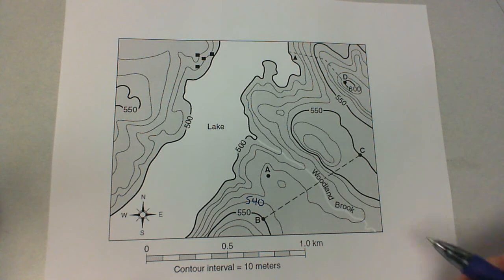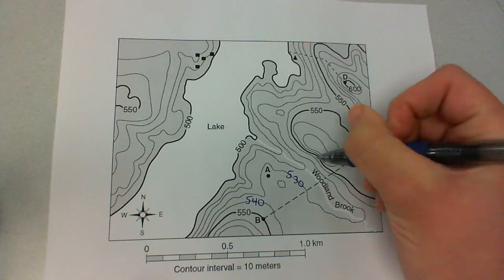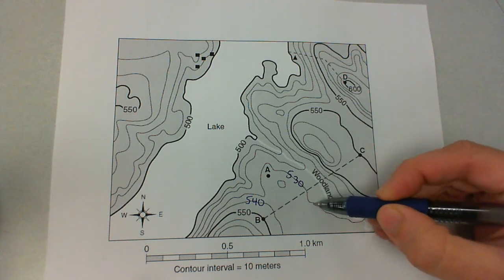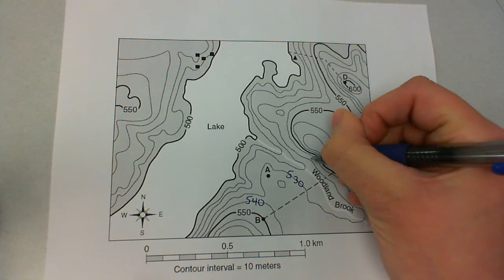And we'll just work our way across. This next one would be 530. And then this is also 530. This line right here, if you follow that around, you can see that that's still the same contour line. So we'll label it 530.